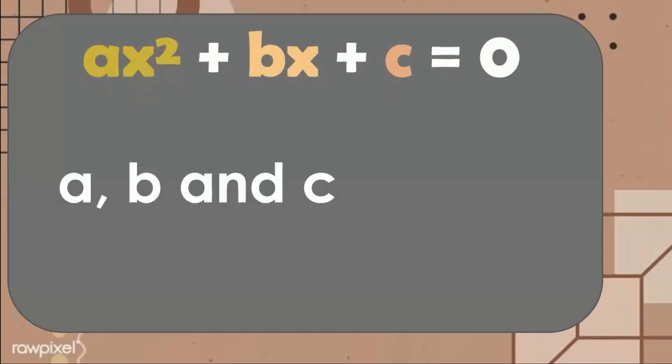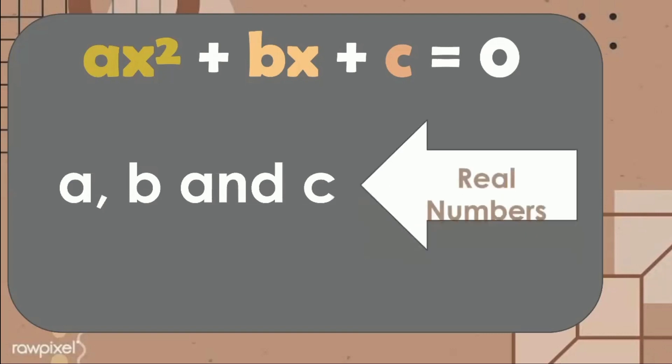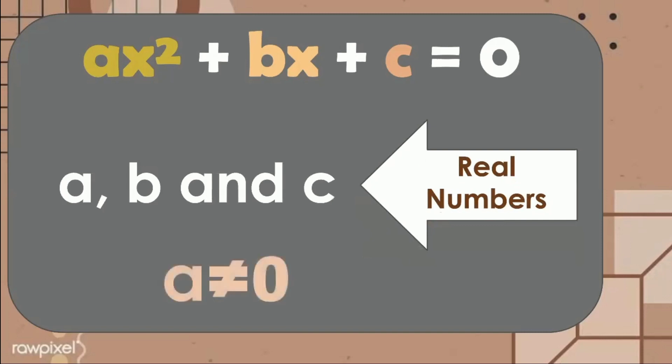Where A, B, and C are real numbers — these are the numerical coefficients of the different parts of our quadratic equation. Another thing to remember is that the value of A should not be equal to zero.